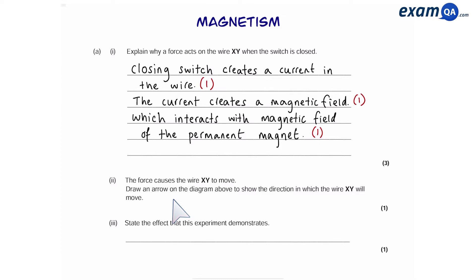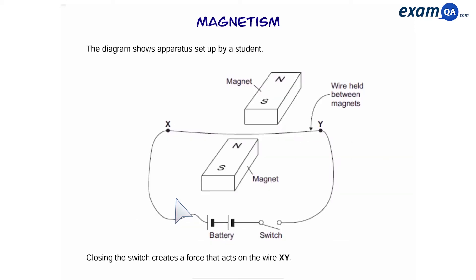Next part. The force causes the wire to move. Draw an arrow on the diagram to show the direction in which the wire XY will move. We're going to have to look at this in more detail.